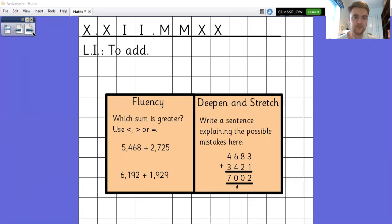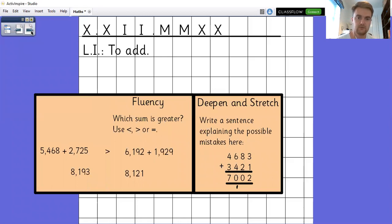Okay, so let's have a look, first of all. So with the fluency question, 5,468 plus 2,725 gives us 8,193, whereas 6,192 plus 1,929 gives us 8,121. So 5,468 plus 2,725 is the greater answer.